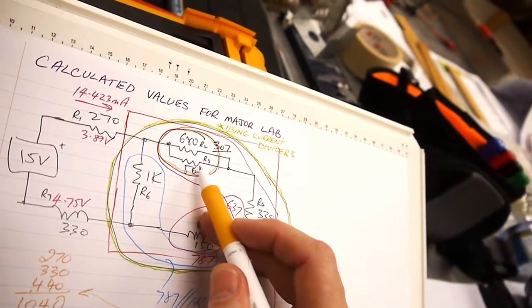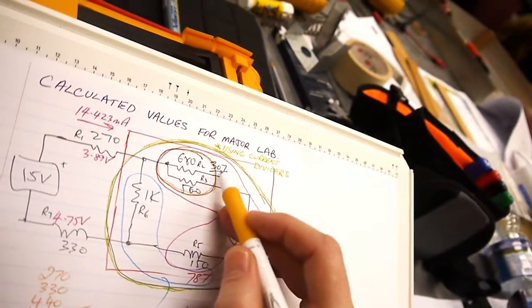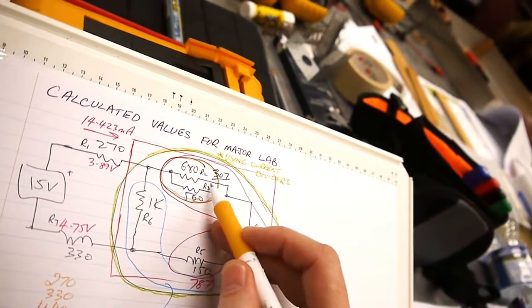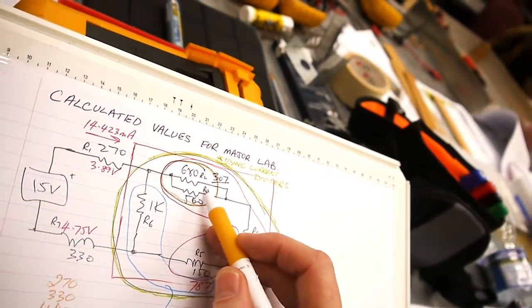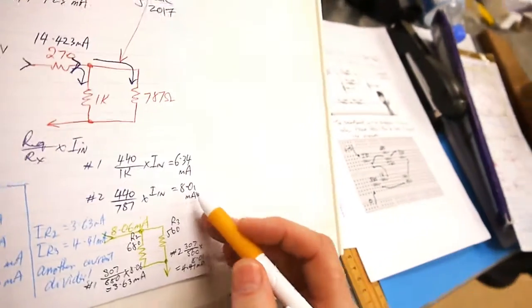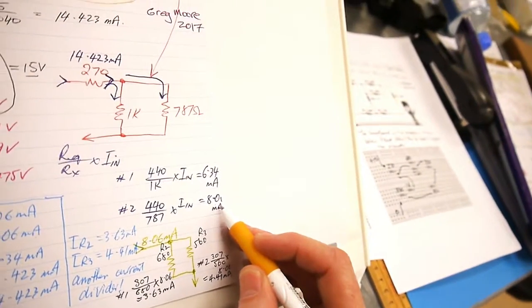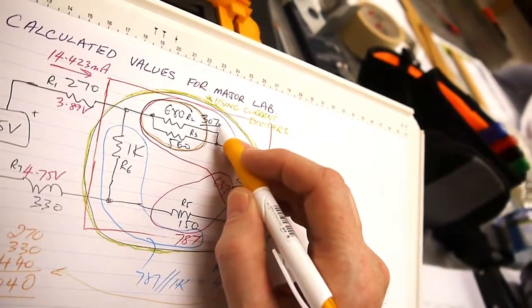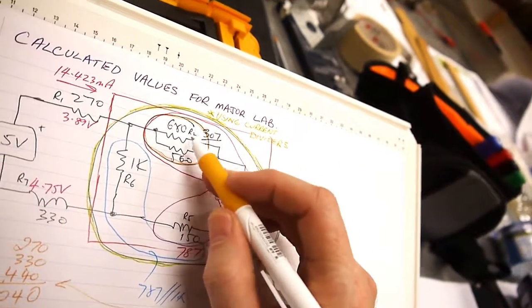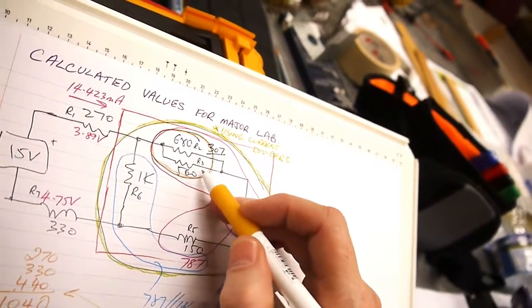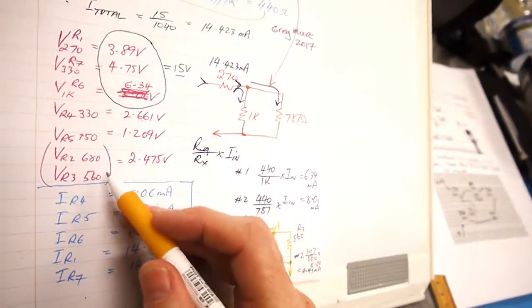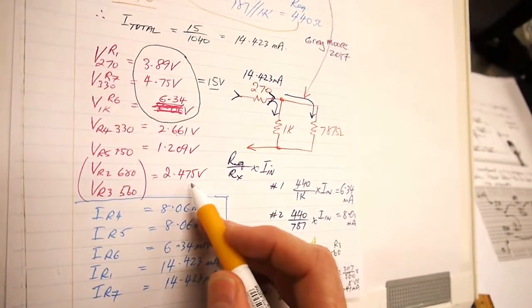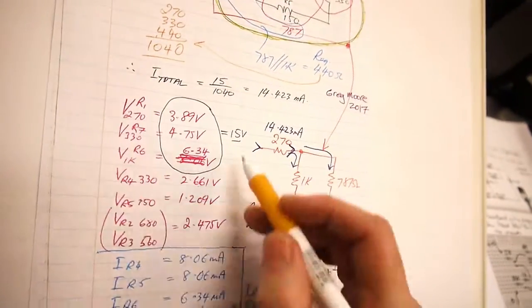Then we come into a bit of a headache up here with the 680 and the 560 in parallel. We knew that had an REQ of 307 ohms. Resistors in parallel have the same voltage across each resistor, so I can use that 8.06 milliamps and multiply times the 307 ohms REQ. That gives me VR2 and VR3, 2.475 volts.